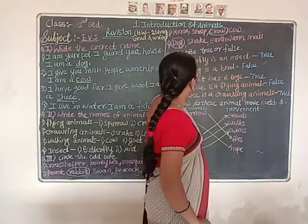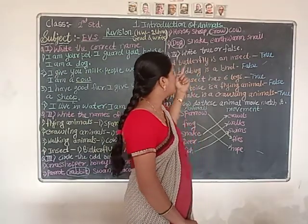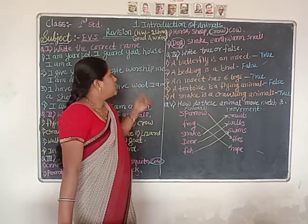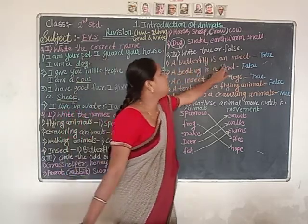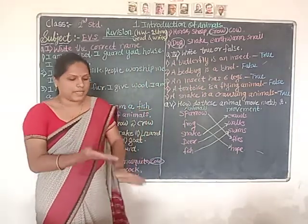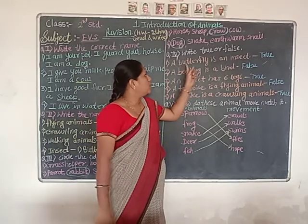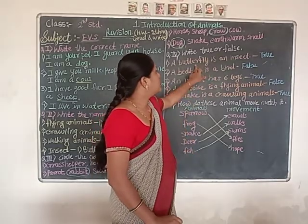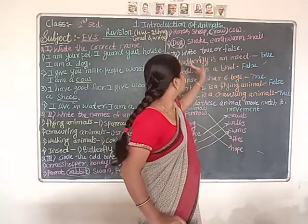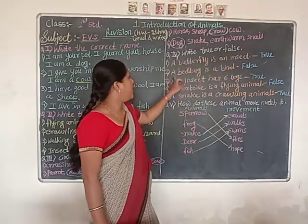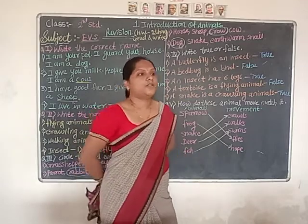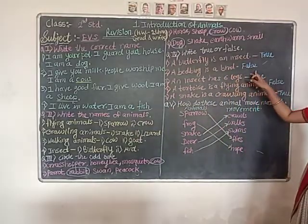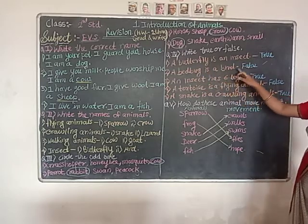Now, true or false. First sentence: 'A butterfly is an insect.' Yes, it is correct — true. Butterfly is small in size, it is an insect. Second: 'A bed bug is a bird.' No — a bed bug is an insect, not a bird. Answer is false. Third: 'An insect has six legs.' Yes, insects have six legs — true. Fourth: 'A tortoise is a flying animal.' No — tortoise is a water animal — false.